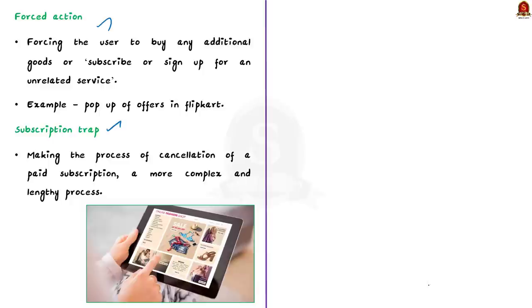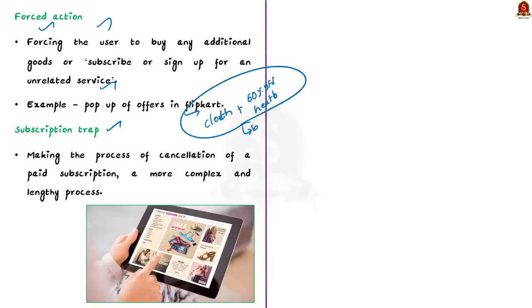The third type is forced action. It is a type of dark pattern that forces the user to buy additional goods or subscribe or sign up for an unrelated service. For example, take the pop-up of offers in Flipkart. We might browse Flipkart to buy some clothes, and there might be a pop-up mentioning a 60% discount on healthcare products. So it might change our mind and we might end up ordering both the clothes and the healthcare products. This is the example of forced action.